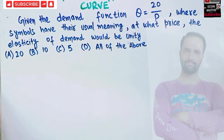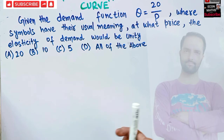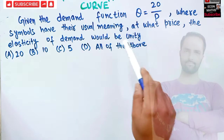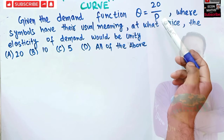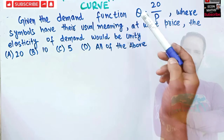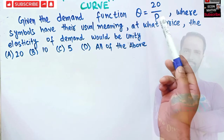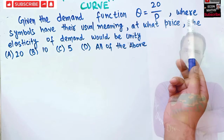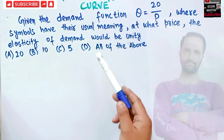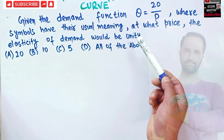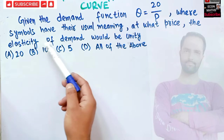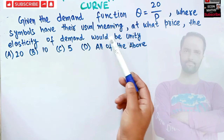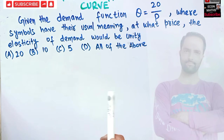In this video we will solve a problem on a rectangular hyperbola demand curve and the elasticity of that curve. The question is: given the demand function Q equals 20 divided by P, where Q denotes quantity demanded and P is the price, at what price would the elasticity of demand be unity? The options are 20, 10, 5, or all of the above.